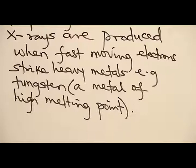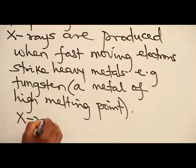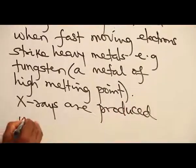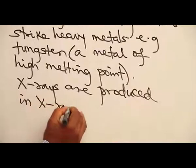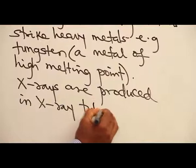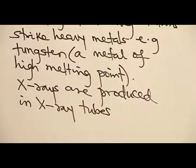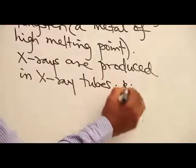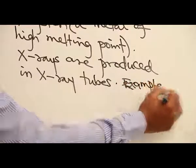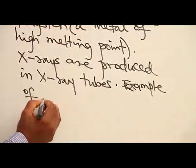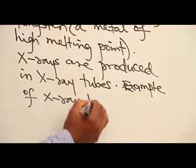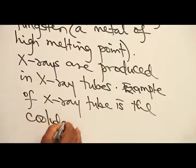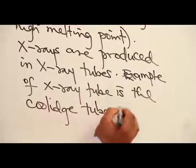X-rays are produced in X-ray tubes. An example is the Coolidge tube, shown below.